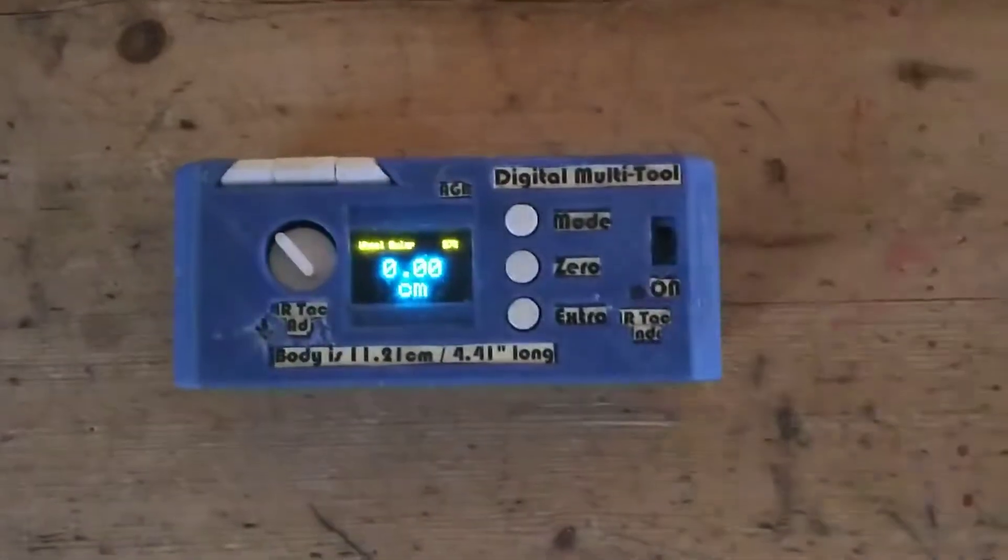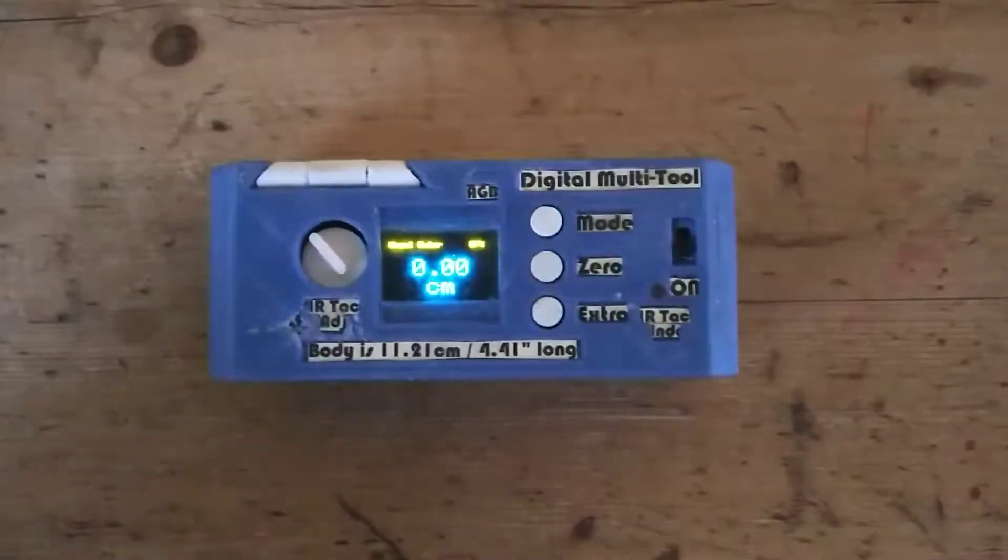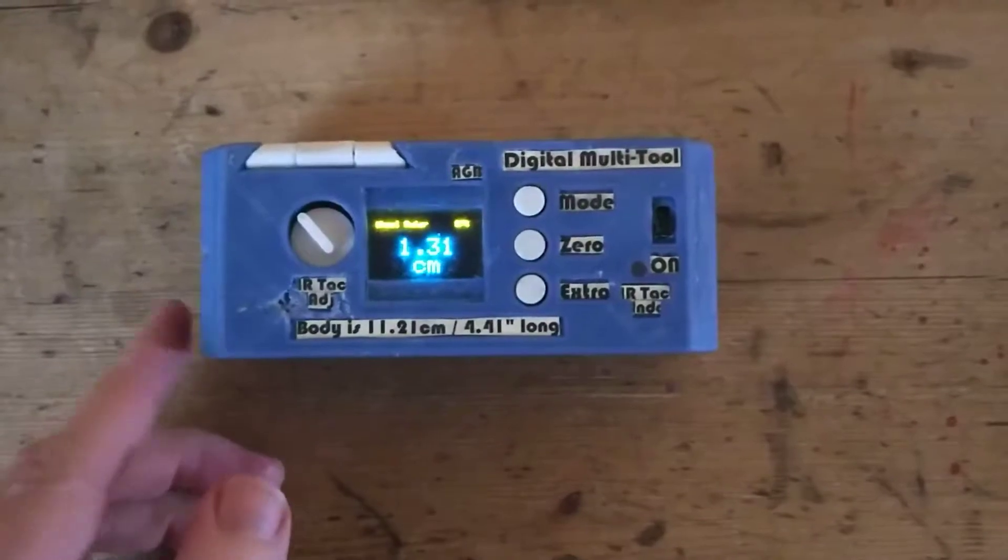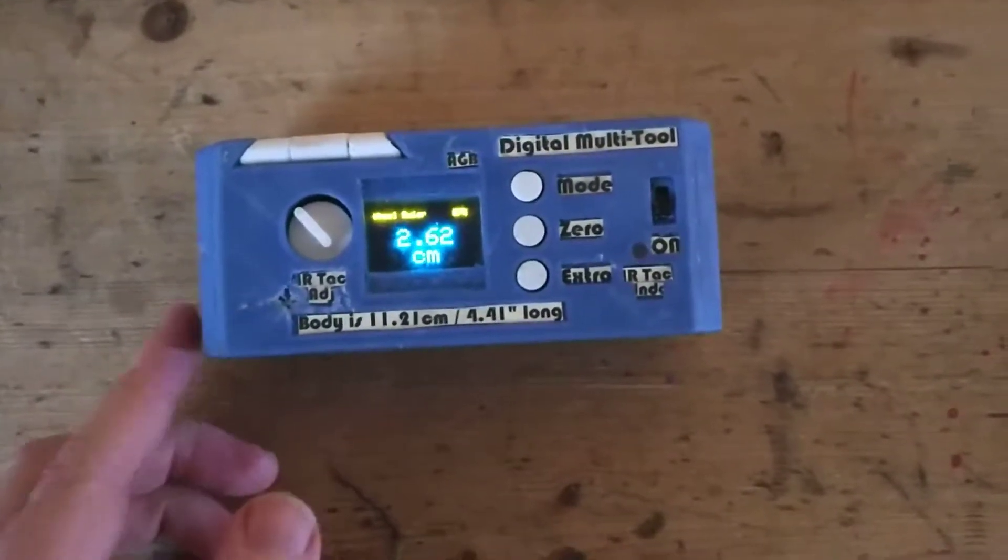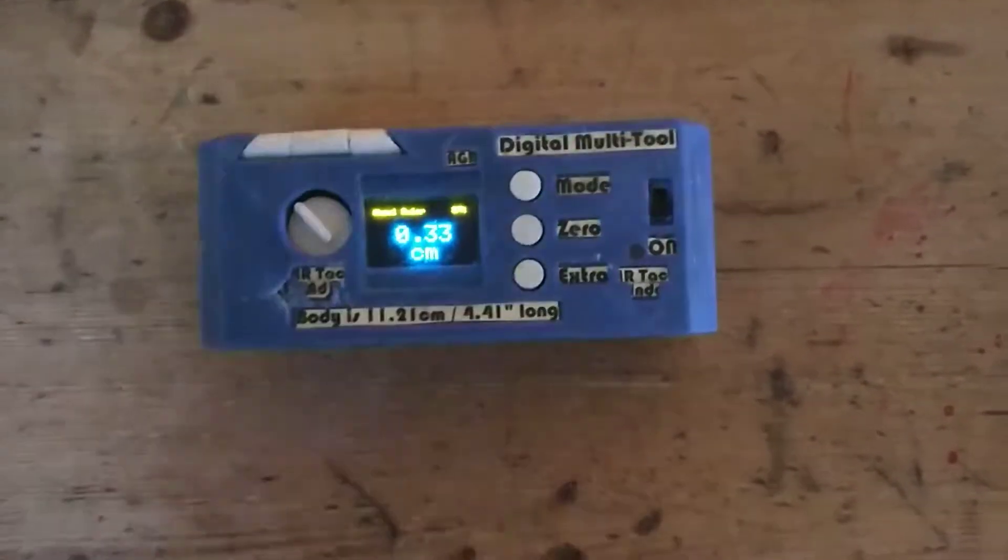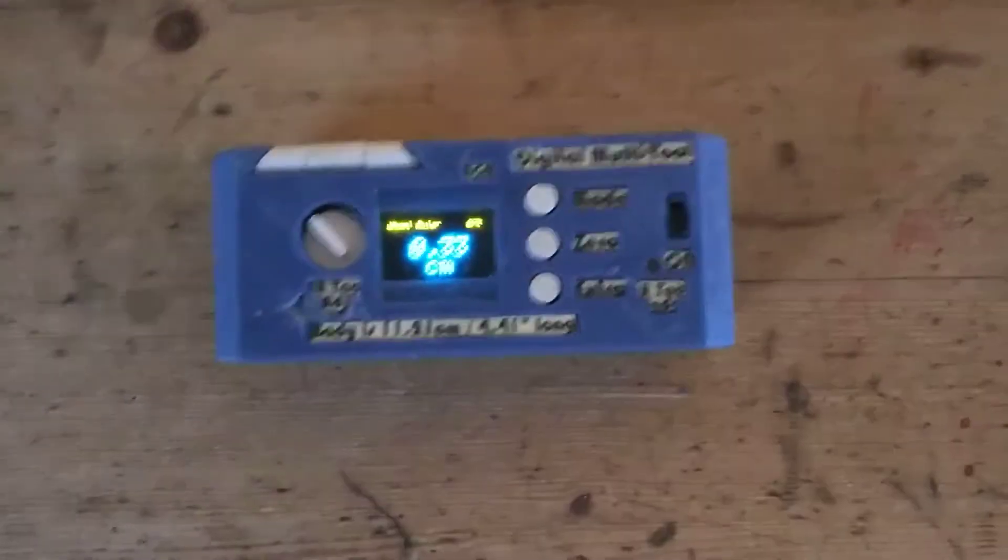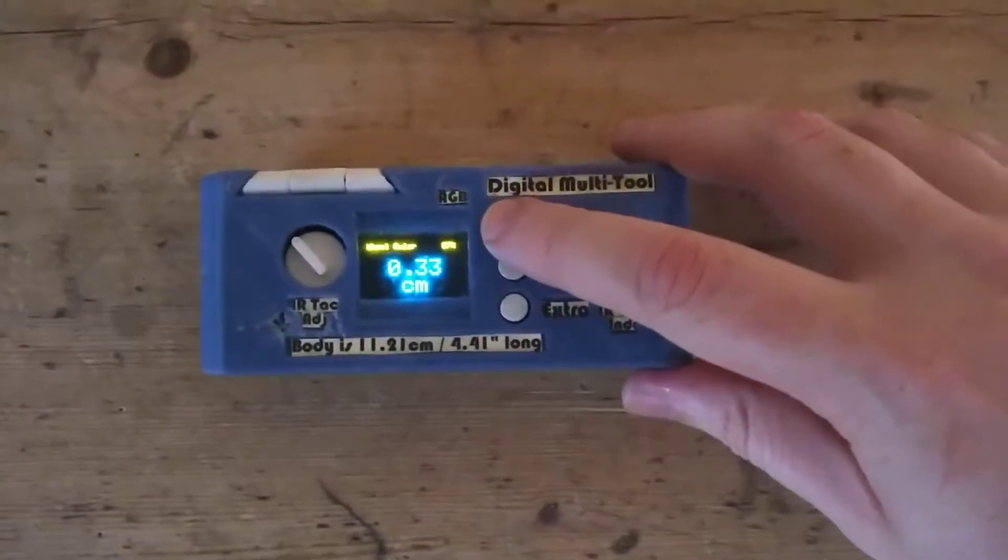Next we have a wheel ruler which uses this wheel on the side of the multi-tool so you can roll this against something and get the measurement, useful for measuring curved objects or oddly shaped objects.